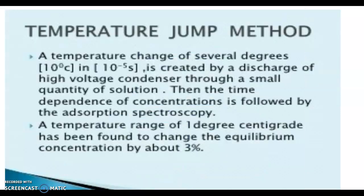In the chemical relaxation method, the first method is temperature jump method. The temperature change of several degrees, that is 10 degrees Celsius in 10^-5 seconds, is created by a discharge of high voltage condenser through a small quantity of solution. Then the time dependence of concentrations is followed by absorption spectroscopy. By this we are calculating the change in the reaction mixture when sudden increase of 10 degrees Celsius takes place in 10^-5 seconds.